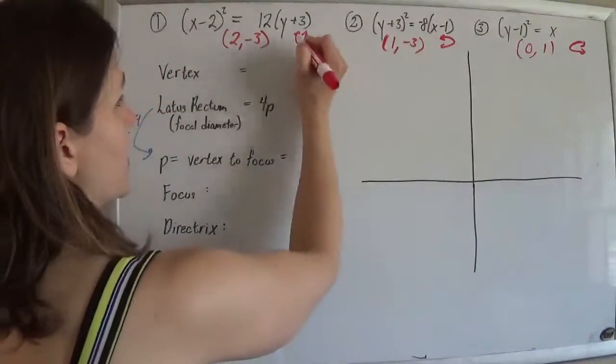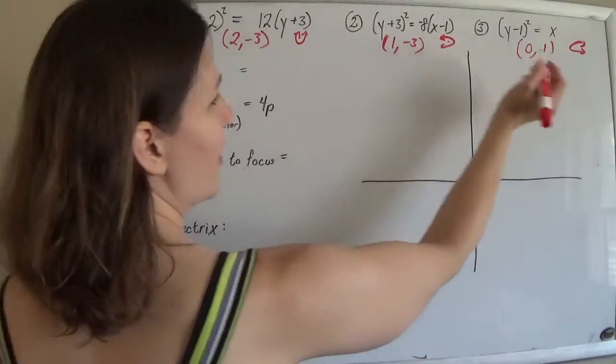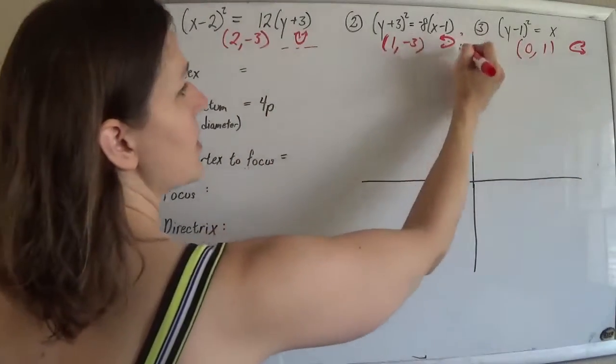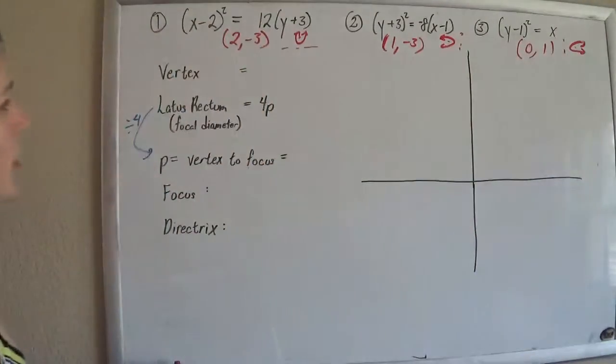So it's going to help me when I graph these, because the foci are always inside the cups of the parabola, and the directrix is always on the other side.